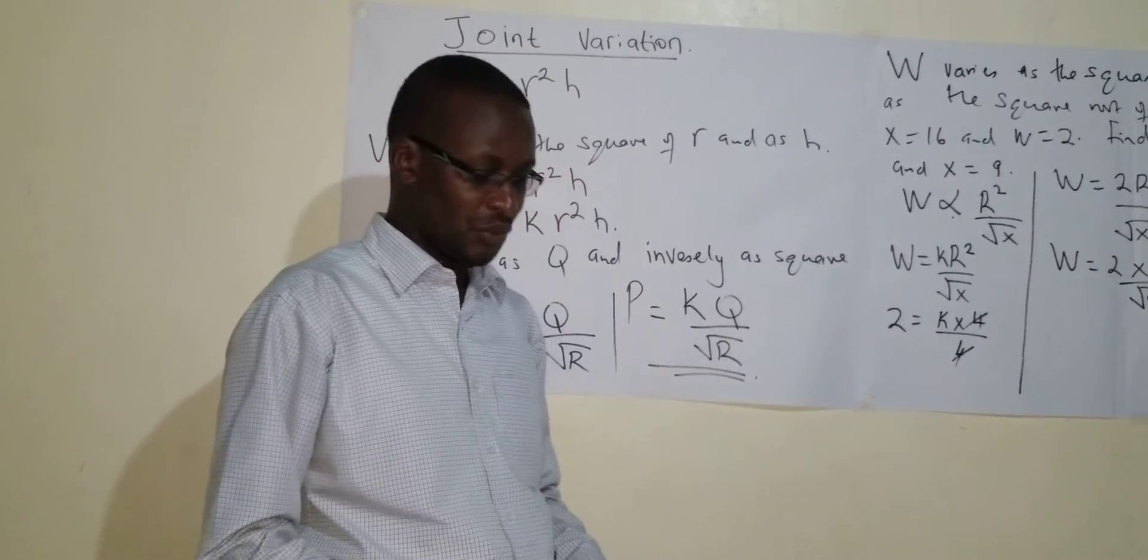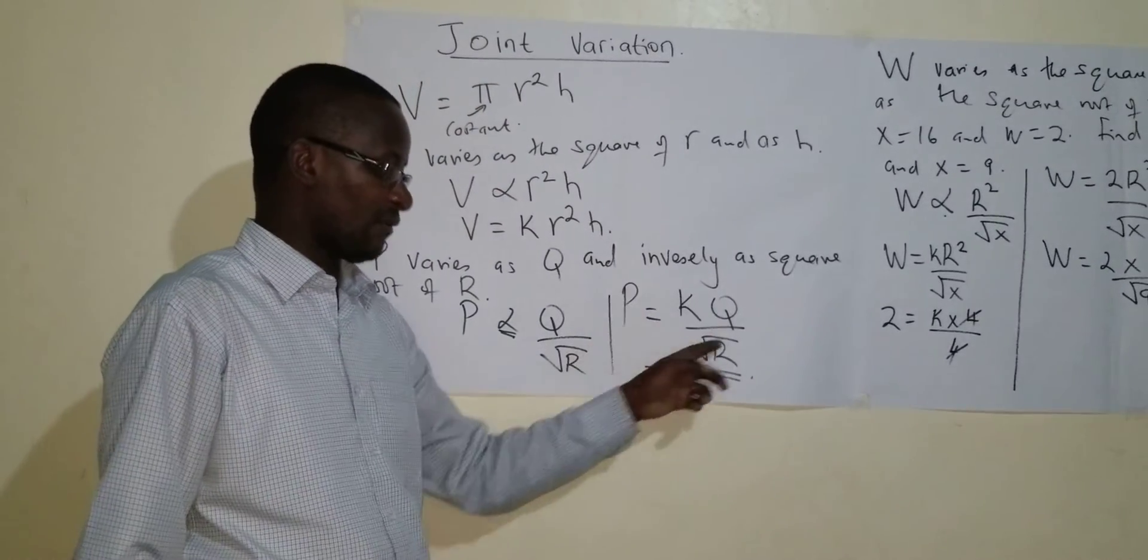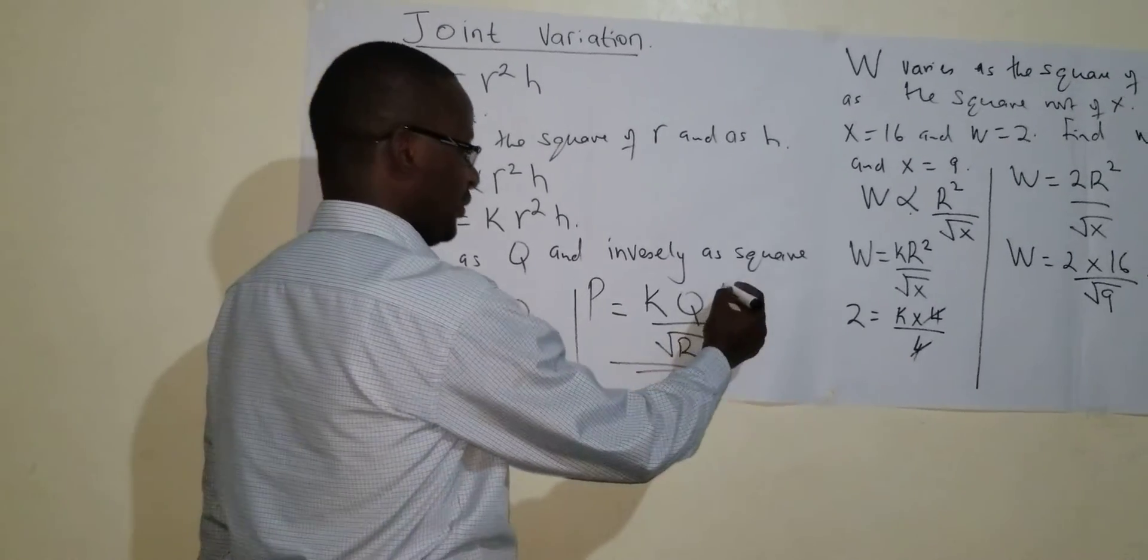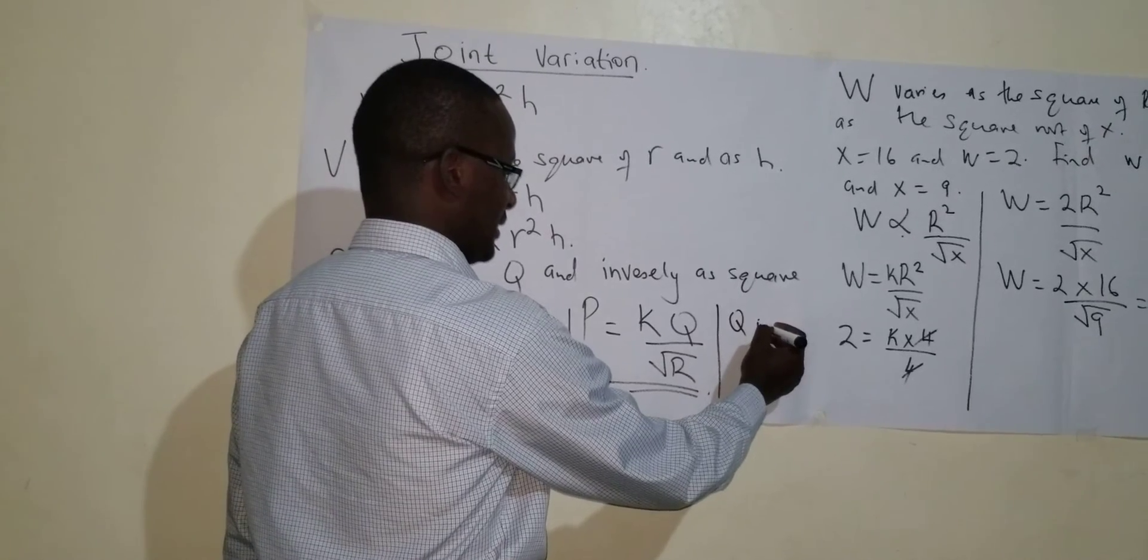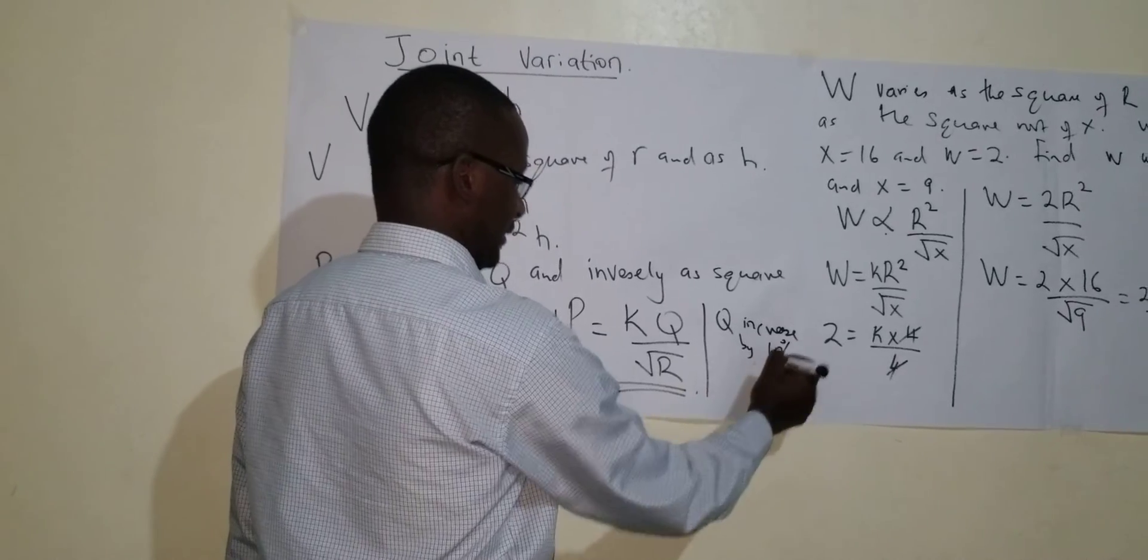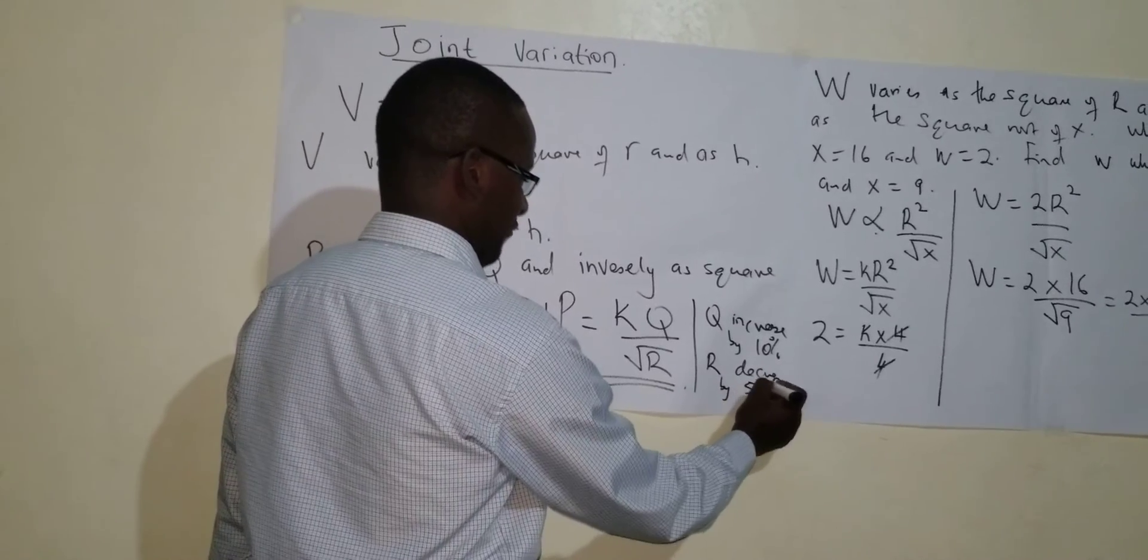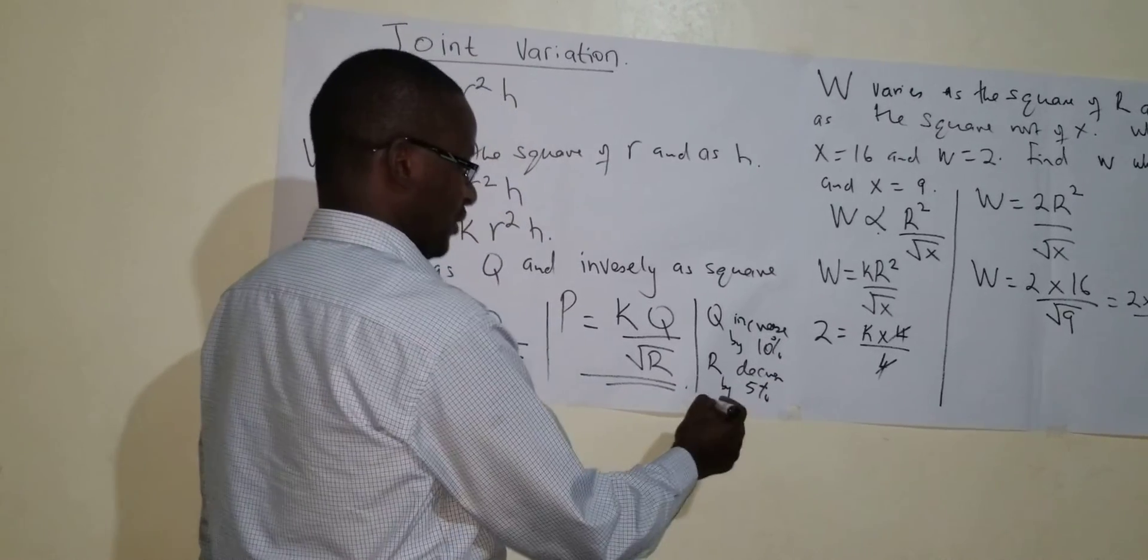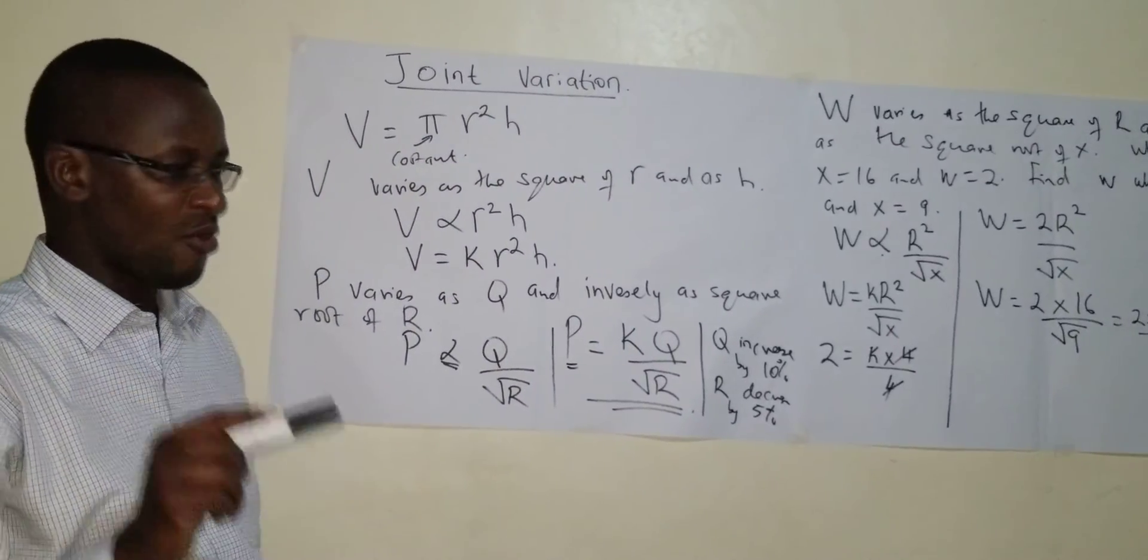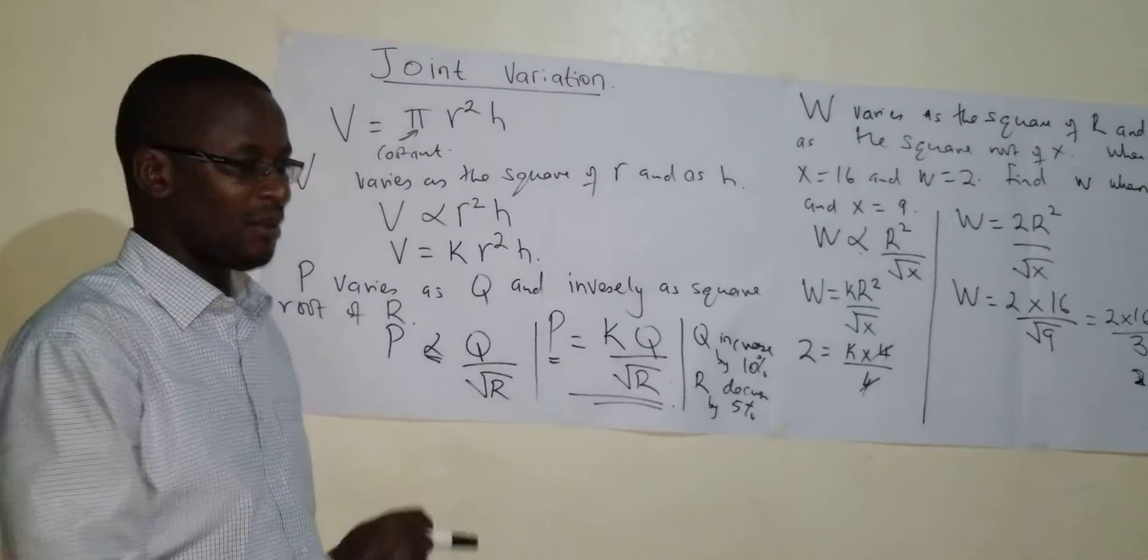So I would like you to go and train yourself how to do the percentage changes. For example, here you can be told that Q increases by 10%, and R decreases by 5%, and so you are told to find the change, the percentage change in P. I would like you to go and do that one on your own. Then we will look at several examples later on about the same.